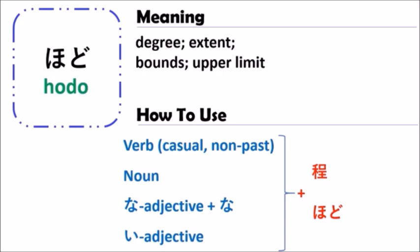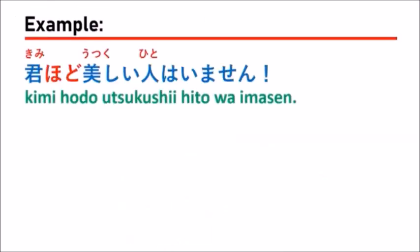Hodo means the level that something could be possible. To better understand how to use the grammar of hodo, let's look at some example sentences together.